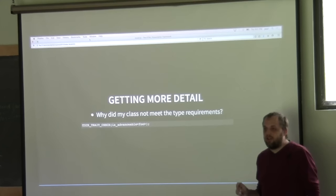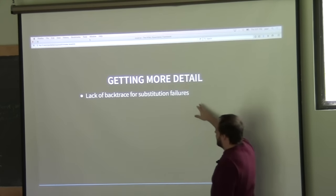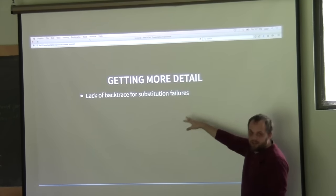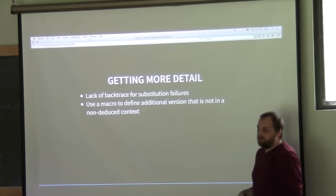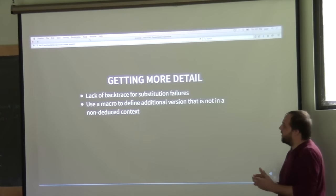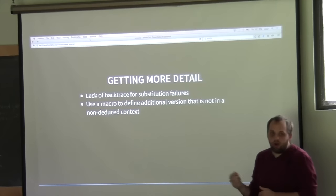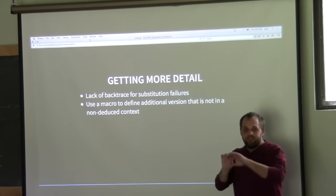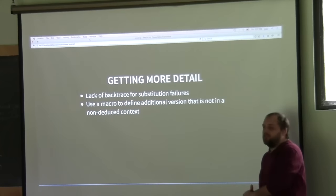It still doesn't tell you the detail for each expression that went wrong, and there's some difficulty with that because of the lack of backtrace for substitution failures. Originally GCC gave you a backtrace for substitution failure, but in newer versions they've taken that away. One possible approach is defining two functions that do the same exact thing inside the trait — one non-deduced to get more detailed error messages. I prefer not to use a macro for that, but haven't found a better approach yet.